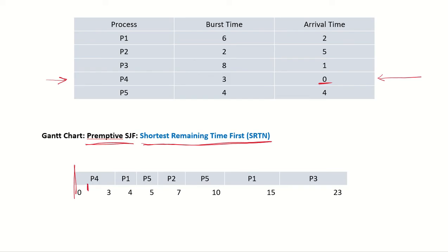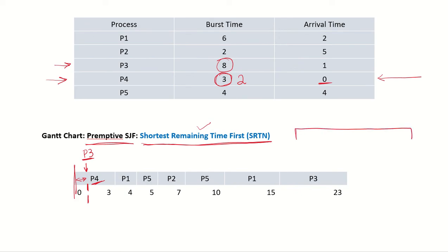At time unit 1, process P3 arrives in the system. P3 arrives and the burst time of P3 is checked with what is the remaining time of the running process P4. The burst time of P3 is 8 and the remaining time of P4 is 2, because the total burst time was 3 and P4 has already run for one time unit. Comparing 2 with 8, P4 has the shortest remaining time.